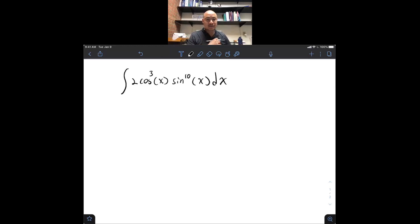So, in this video, we are going to be looking at the antiderivative of 2 cosine cubed of x times sine of x to the 10th dx.